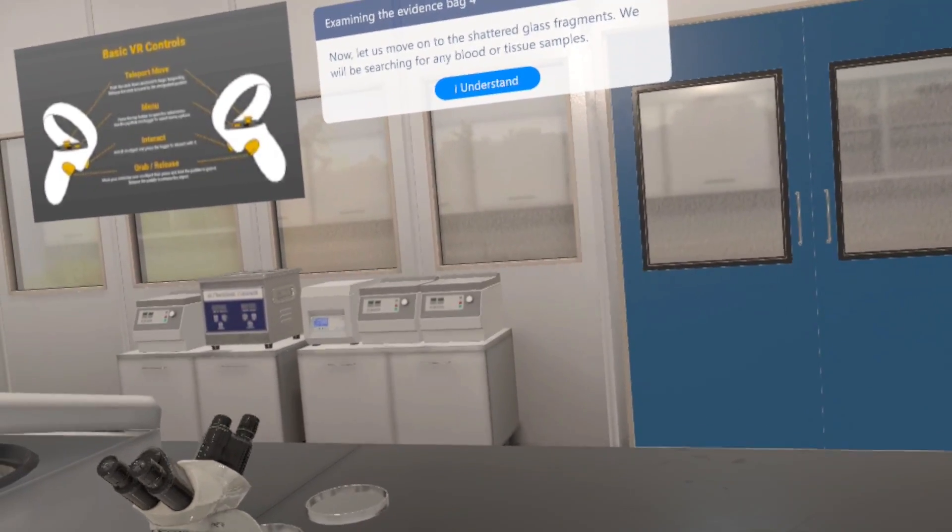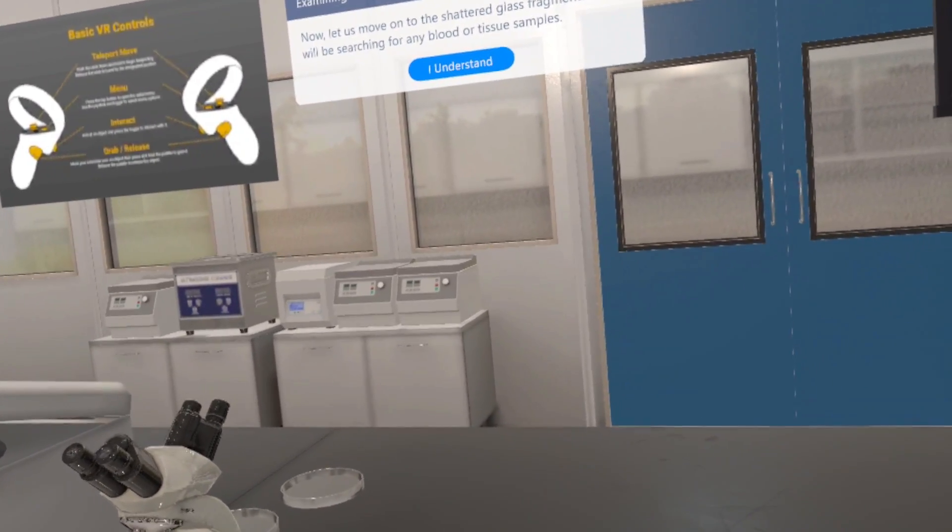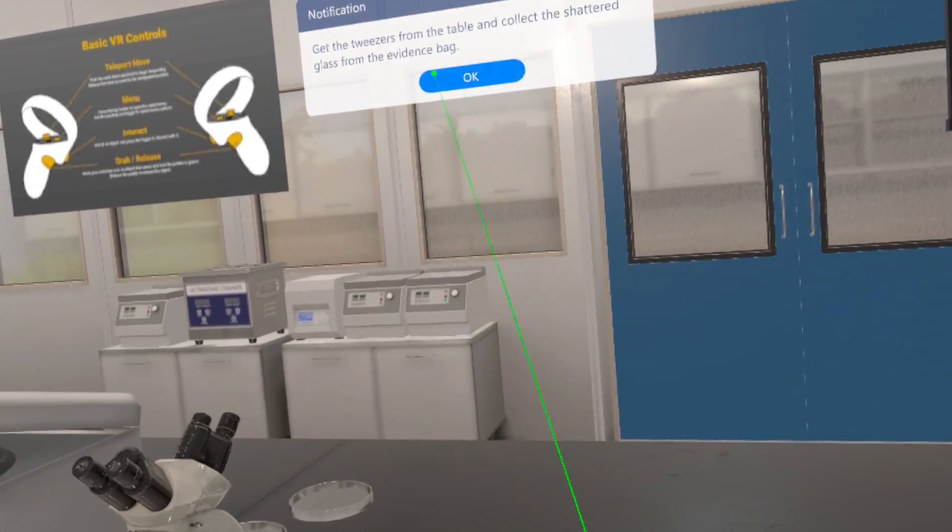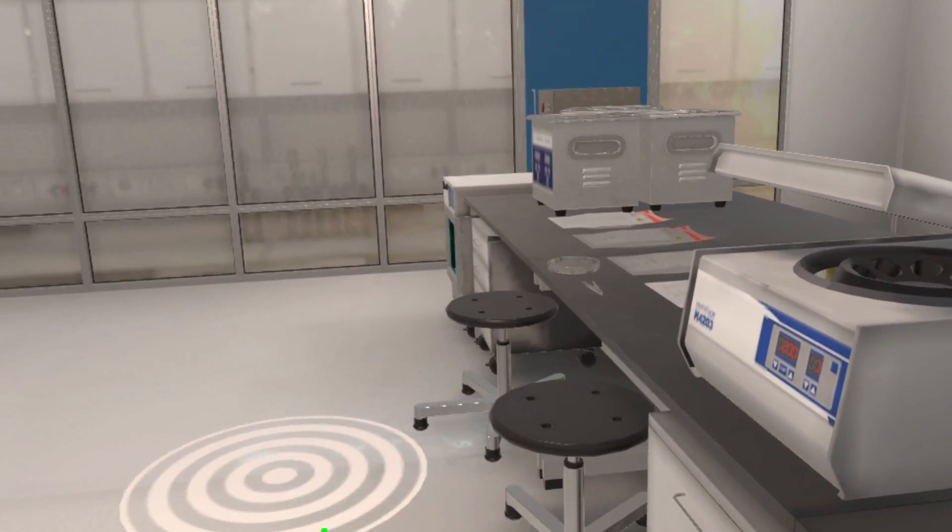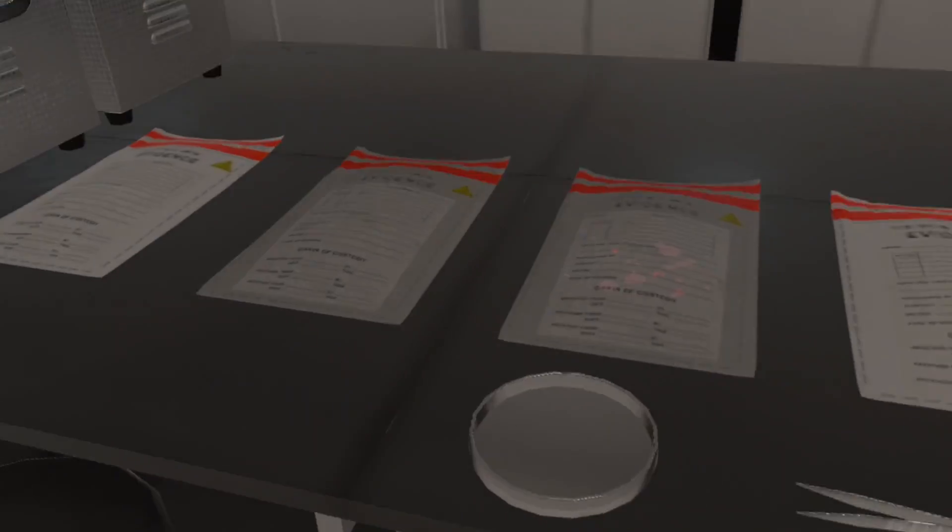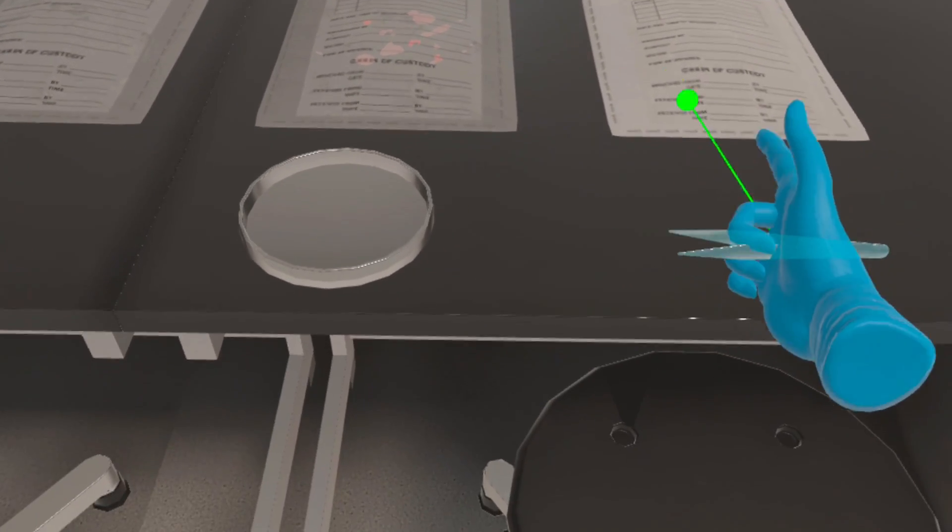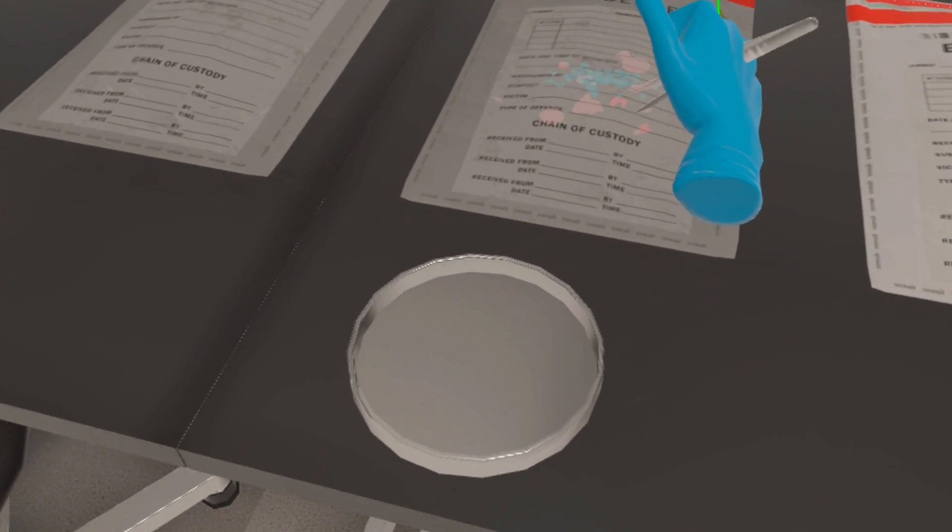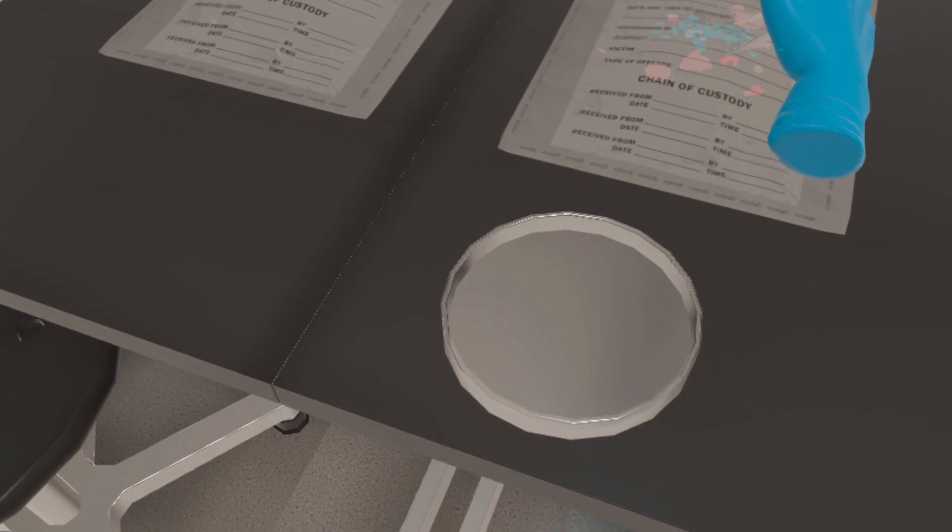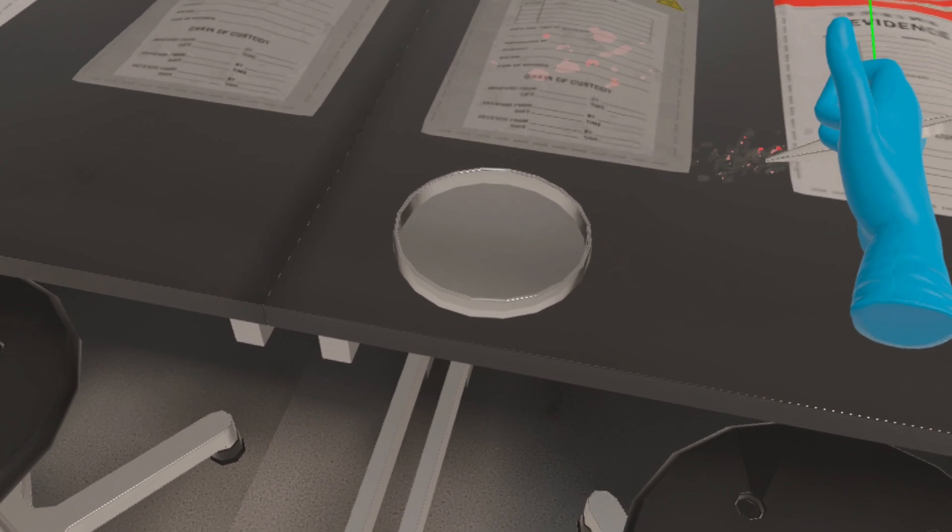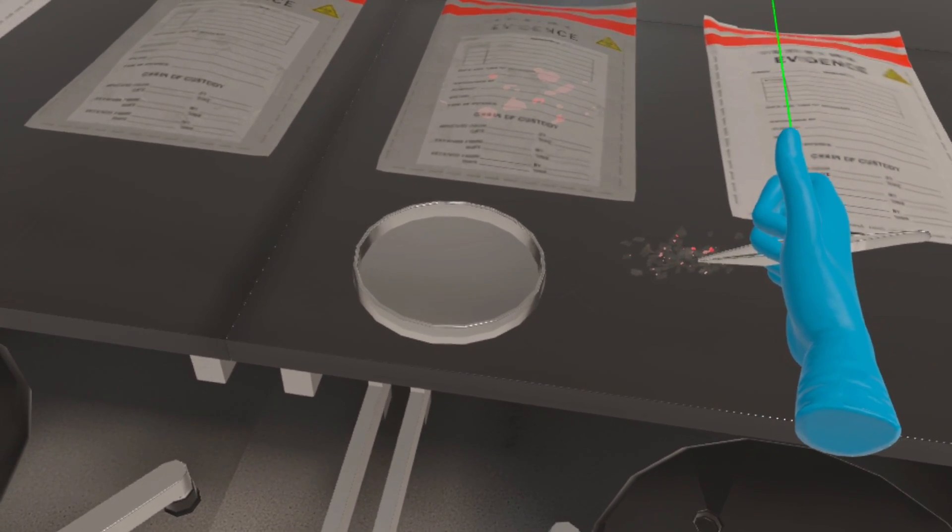Now let us move on to the shattered glass fragments. We will be searching for any blood or tissue samples. Get the tweezers from the table and collect the shattered glass from the evidence bag. Place the shattered glass in the petri dish and place it under the UV light.